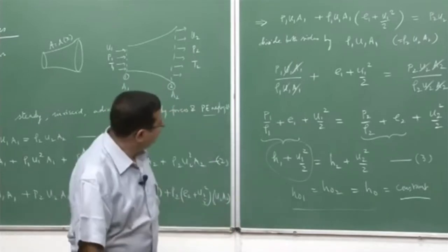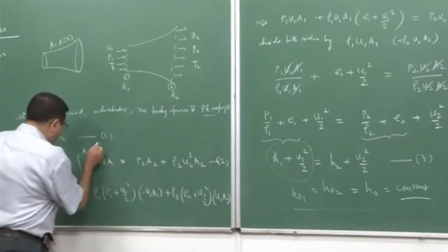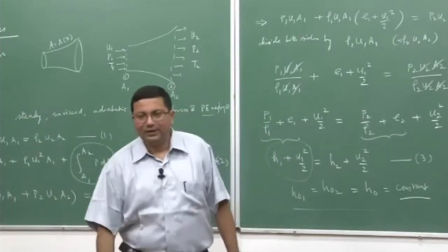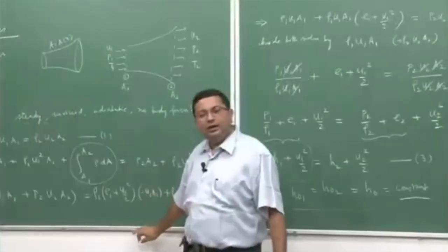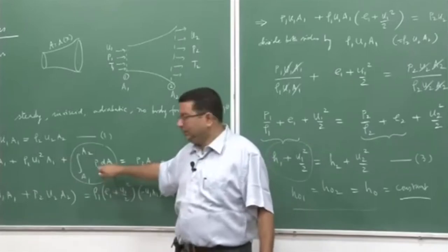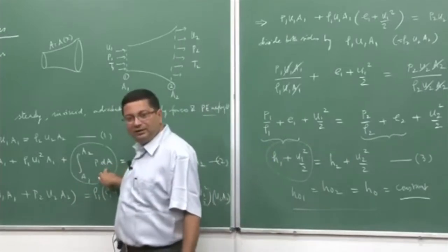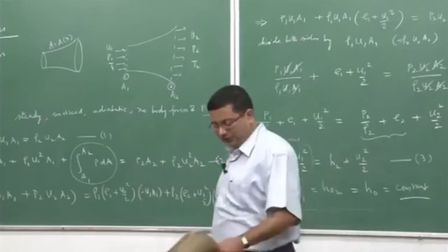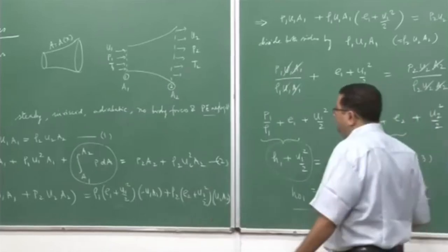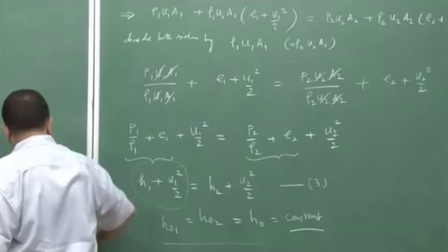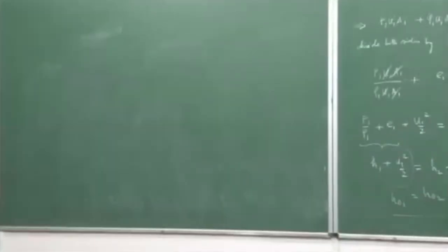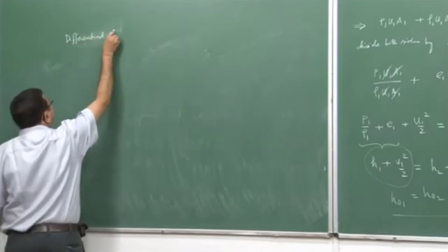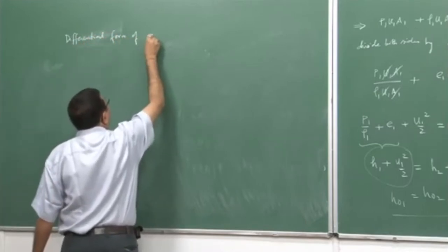The integral form can easily handle the continuity and energy equations, but for the momentum equation, one term — involving the variation of area — remains unless we specify the area variation. So now let us look at the differential form of the conservation equations.